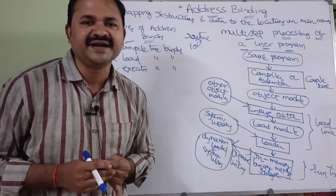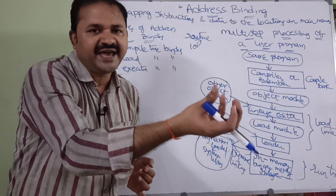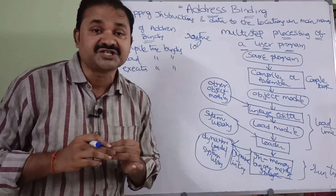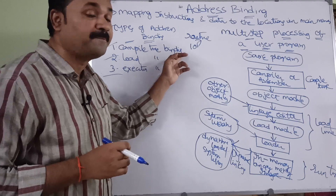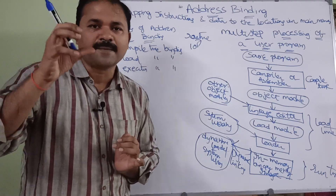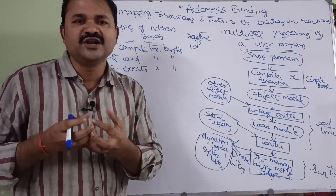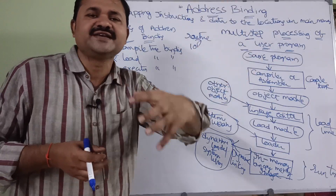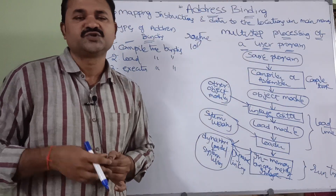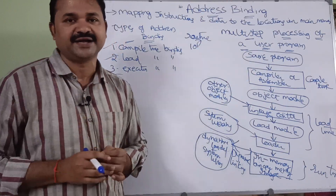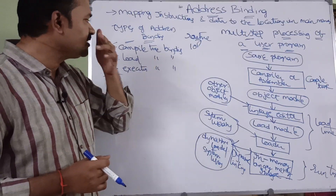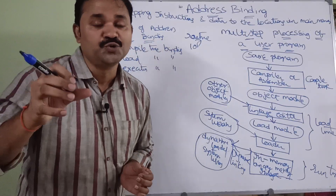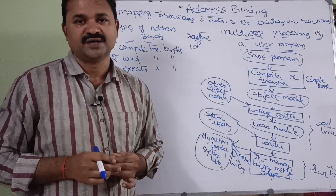Compile time binding means if we know where the process resides in main memory at compilation time, it is called compile time binding. At compilation time, we know the information about where the process resides in main memory. During compilation time, the compiler produces absolute code.